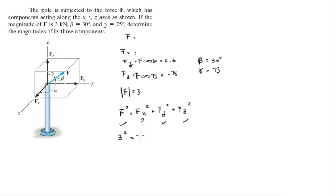3 squared is equal to F of x squared plus 2.6 squared plus 0.78 squared. When you solve for F of x, you're going to get that x is equal to 1.28.